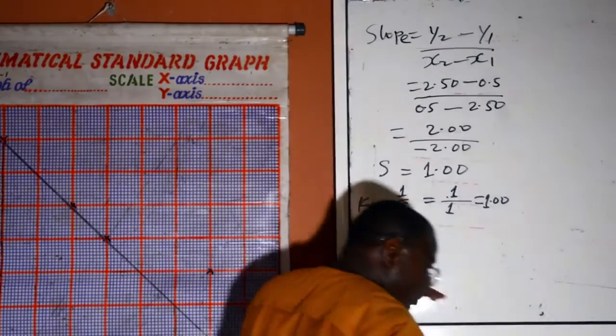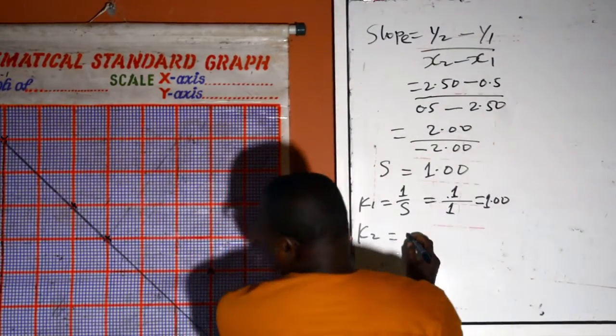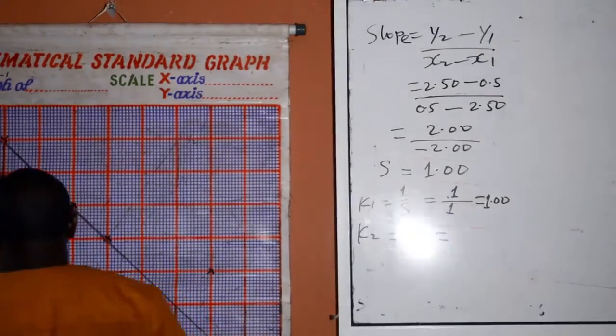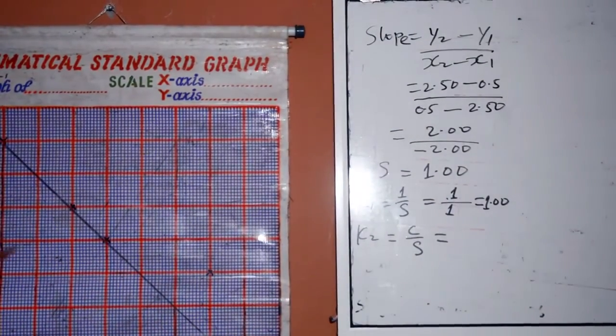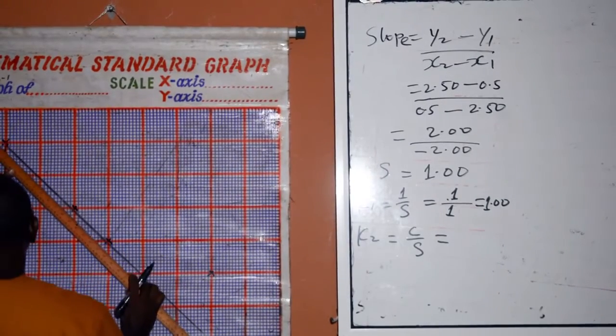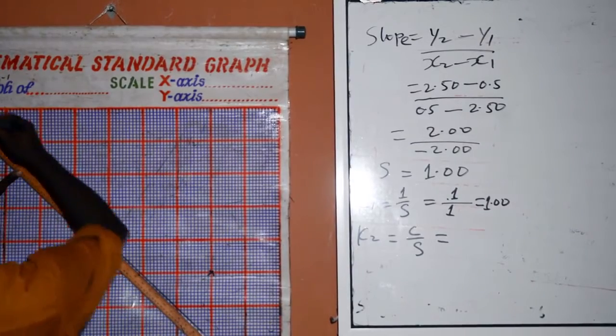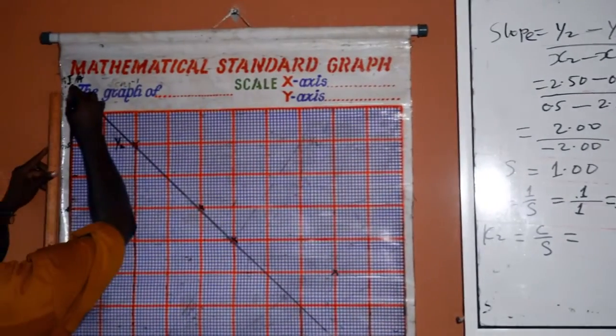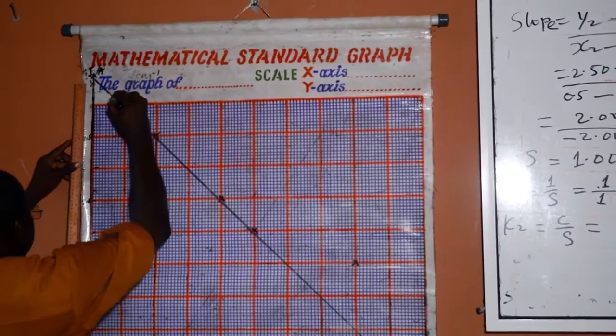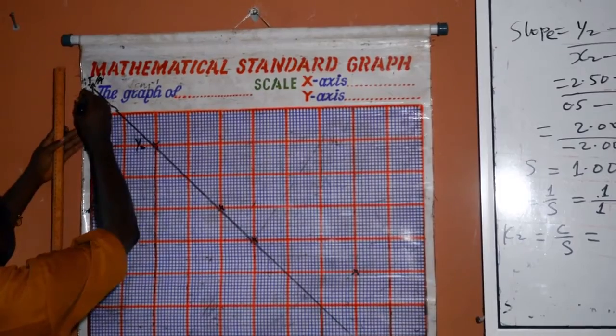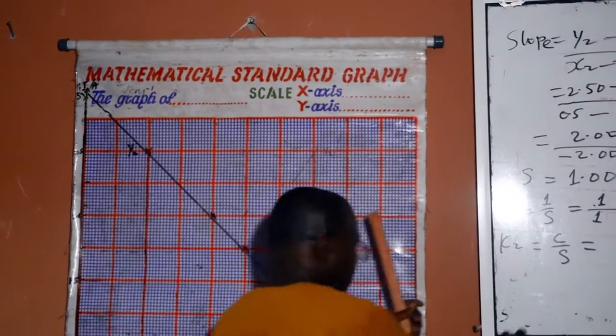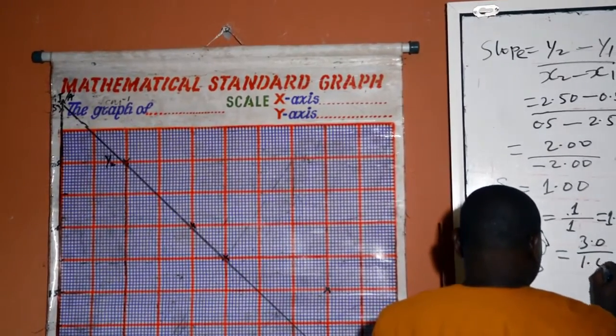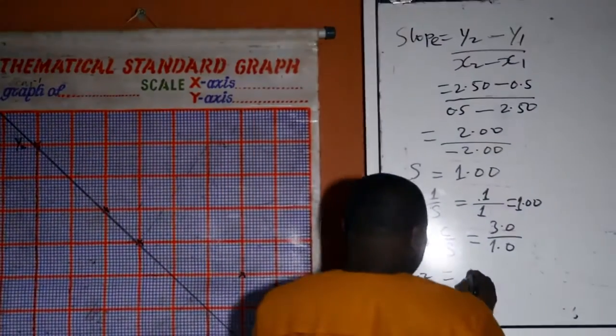Then K2, C over X intercepts. Intercepts here is 3. C is 3.0 and the slope is 1. So K2 is equal to 3.0.